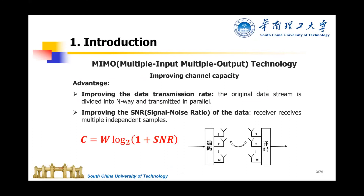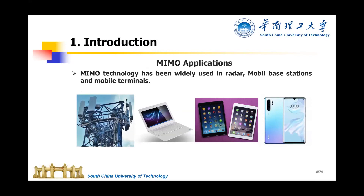In the fifth-generation mobile communication, the MIMO technology is very important. For this method, we have two advantages: first, improve the data transmission rate, and second, improve the signal-to-noise ratio of the data. Currently, most of the MIMO technology has many applications, for example, in the base station, in the mobile terminal, or the mobile phone.